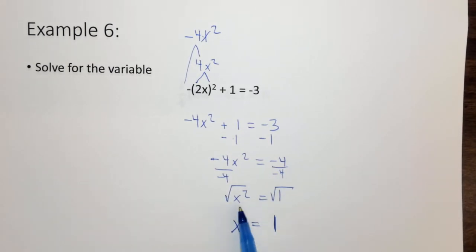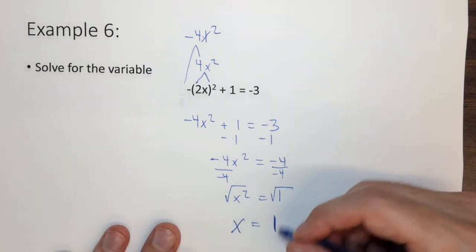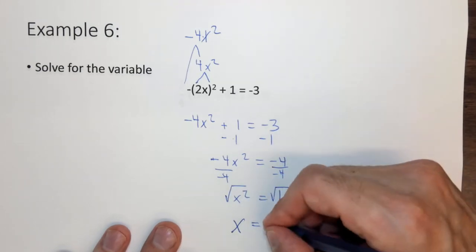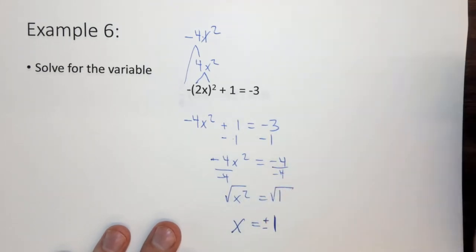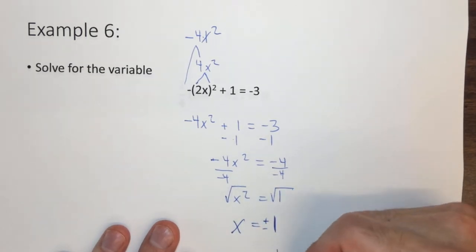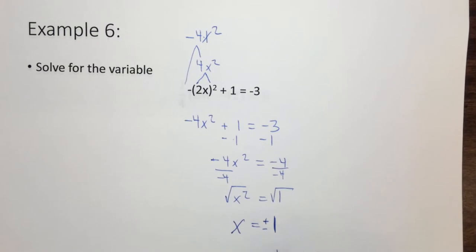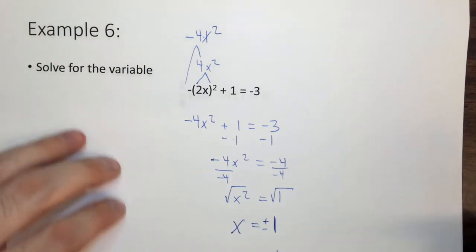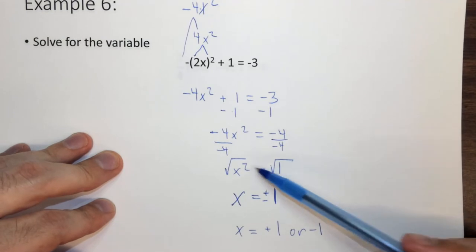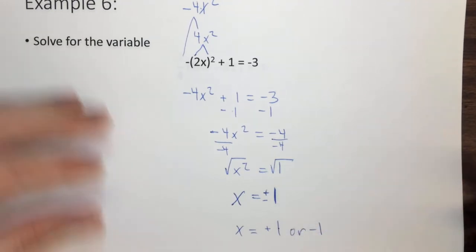Note though, that whether x was 1 or x was negative 1, you would still get the same answer. So when you take the square root, you have to get both the positive value and the negative value. So you can write it like this, or you could say x equals plus 1 or minus 1. And the reason for that is that squared term there, which makes it so it could be plus 1 or minus 1.